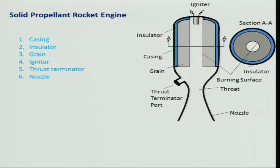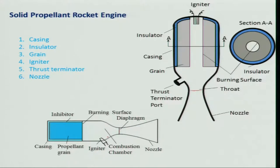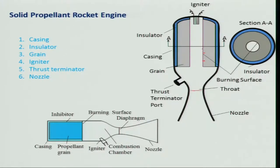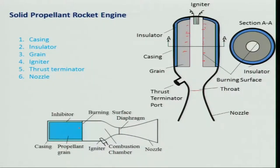The igniter initiates combustion. A diaphragm is used so that when ignition starts, pressure builds up before gas is allowed through the nozzle — this higher pressure enables a higher burning rate. Two types of burning grains exist: end-burning grain, where burning occurs from one face like a cigarette burning along its length, and side-burning grain, where burning occurs along the cylindrical surface. Both configurations have the same components: casing, insulator, grain, igniter, thrust terminator, and nozzle.